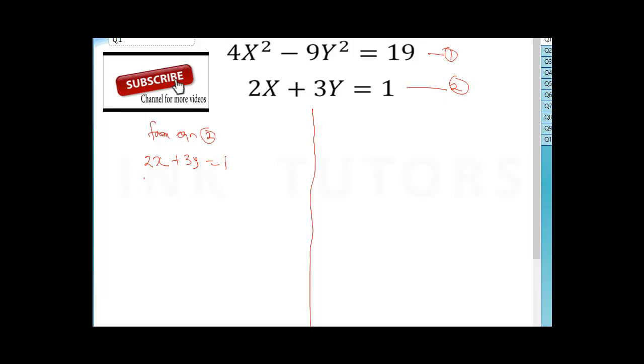I will now do 2x = 1 - 3y. Therefore, x = (1 - 3y)/2. So this I'll call equation three.